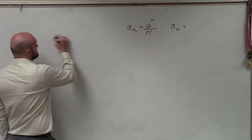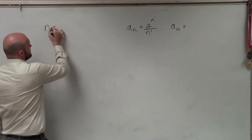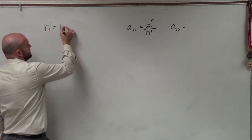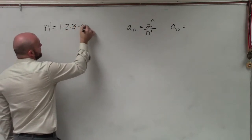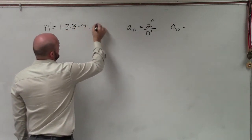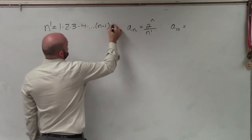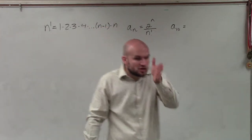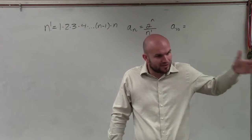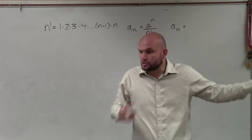So n factorial just means 1 times 2 times 3 times 4 dot dot dot times n minus 1 times n. You start at 1 and multiply every single subsequent integer until you get to your value.